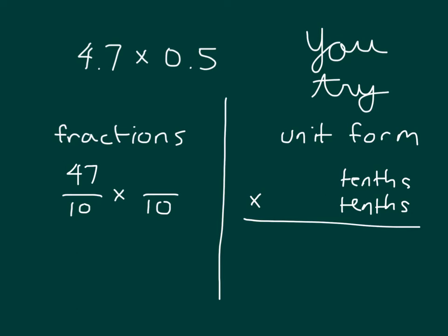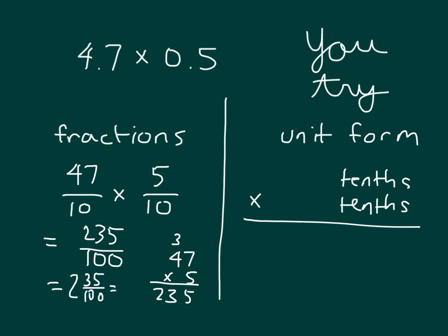Did you break it apart using that fractions approach correctly? It would be 47 tenths times 5 tenths, which equals hundredths, and we'd have to work out 47 times 5. 5 regroup the 3, 20 plus 3 is 23, that's 235 hundredths. So that is a mixed number of 2 and 35 over 100, which equals 2.35.